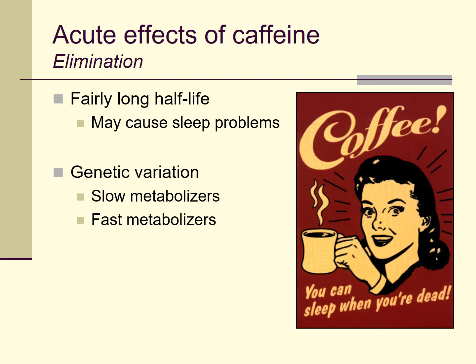There is some interesting genetic variation in caffeine metabolism. Some people, by virtue of their genes, are relatively faster caffeine metabolizers, and some are relatively slow. I suspect I'm a fast caffeine metabolizer because I've always drunk a fair bit of caffeinated beverages and I tend to get over the caffeine effects pretty fast — I almost never have the problem of drinking coffee or tea and then having a hard time falling asleep at night.